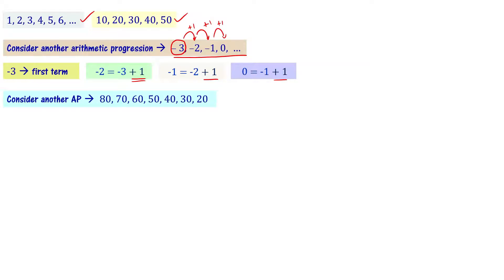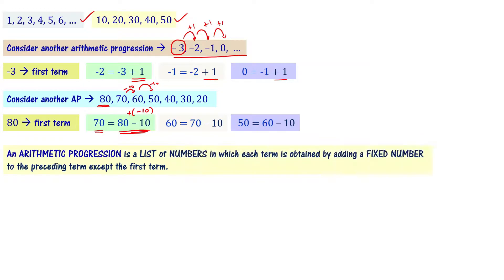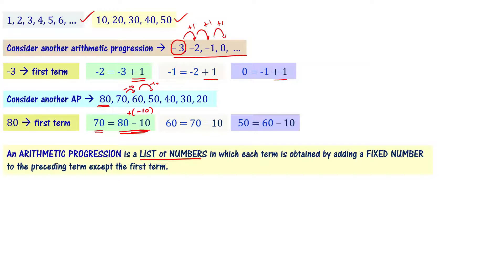It is also an arithmetic progression: 80, 70, 60, 50, 40, 30, 20. The first term is 80. The next term 70 is obtained from 80 by adding minus 10. So 80 minus 10 is 70. 60 is equal to 70 minus 10. 50 is 60 minus 10. So here the fixed number being added is minus 10.